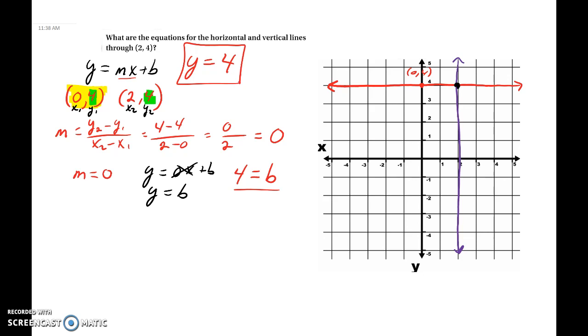Alright, so now let's do our vertical line. Same thing, y equals mx plus b. First thing we need to solve for is our slope. So we have this point here that we already know is (2, 4), and let's just pick this point, (2, 0). So we have the points (2, 4) and we have the points (2, 0).